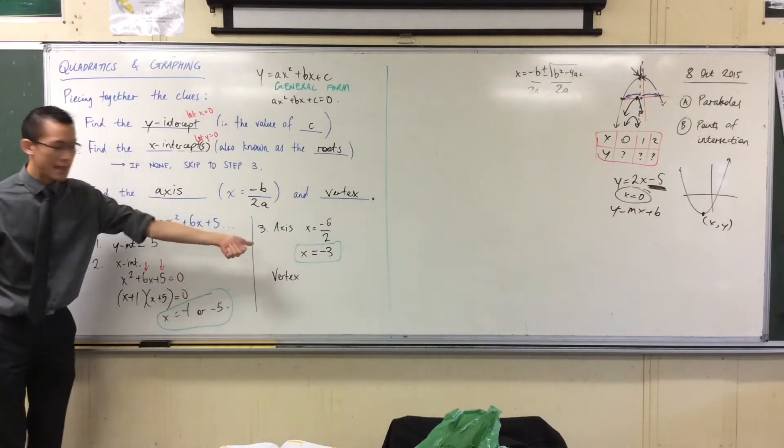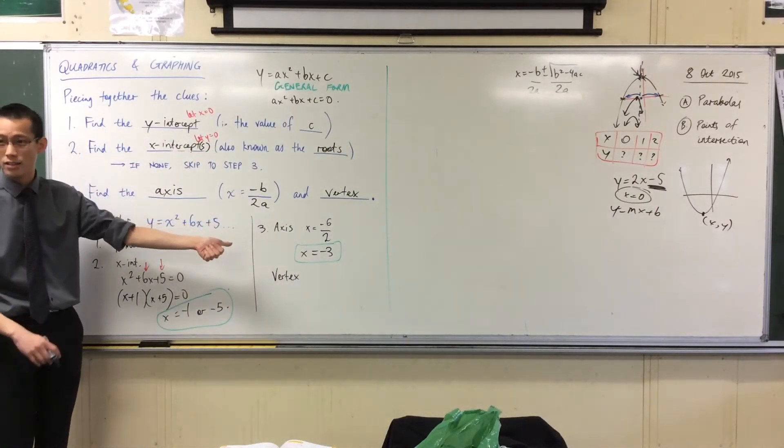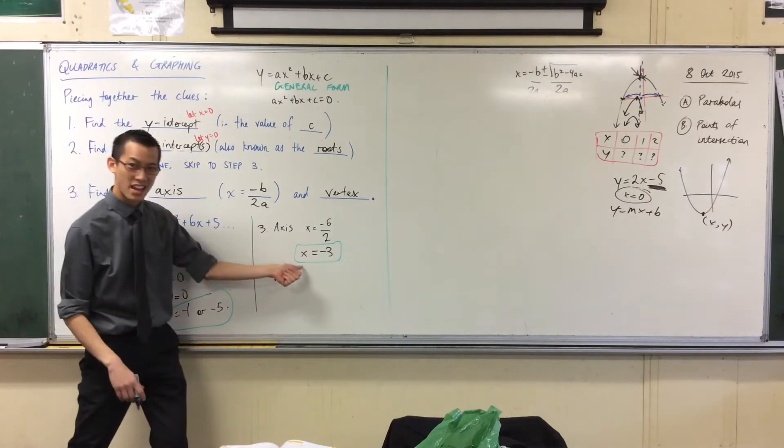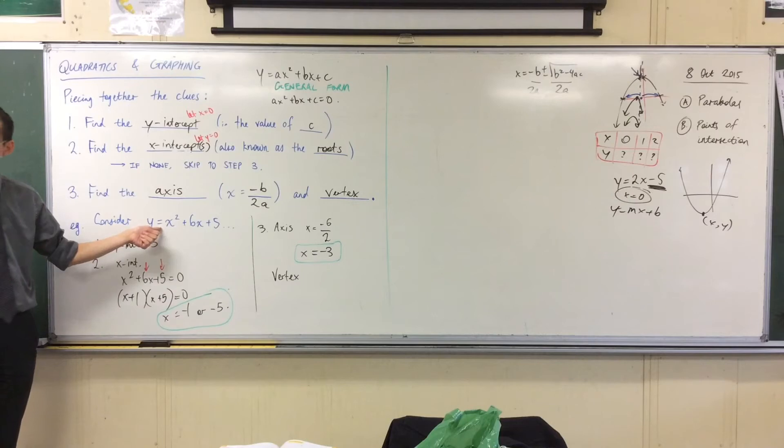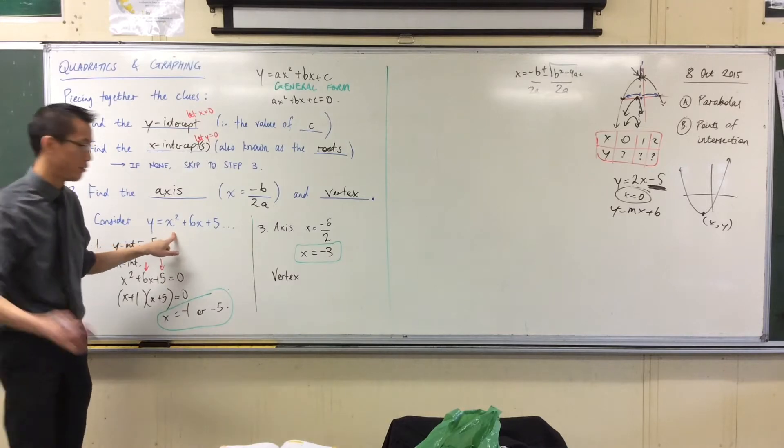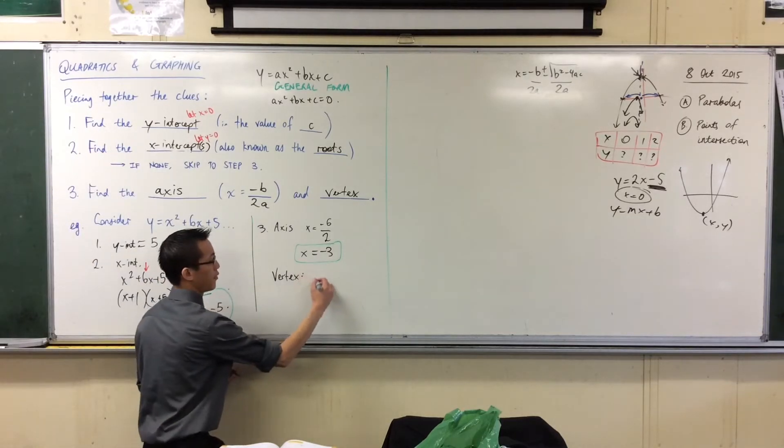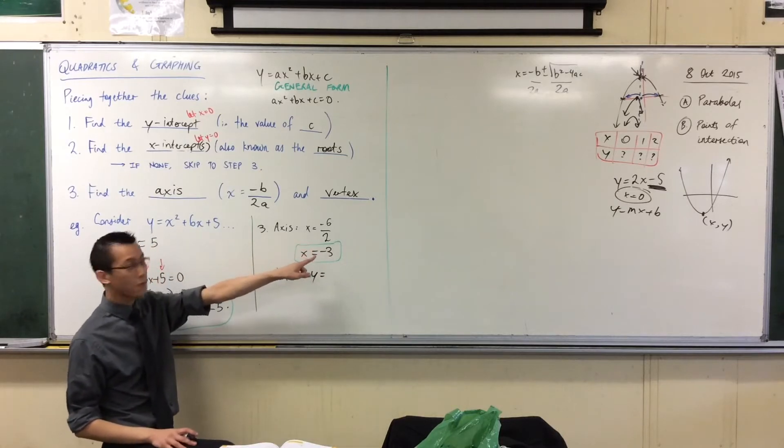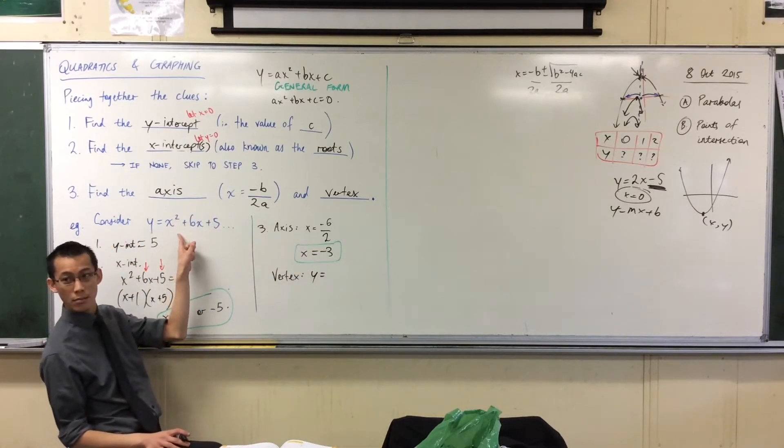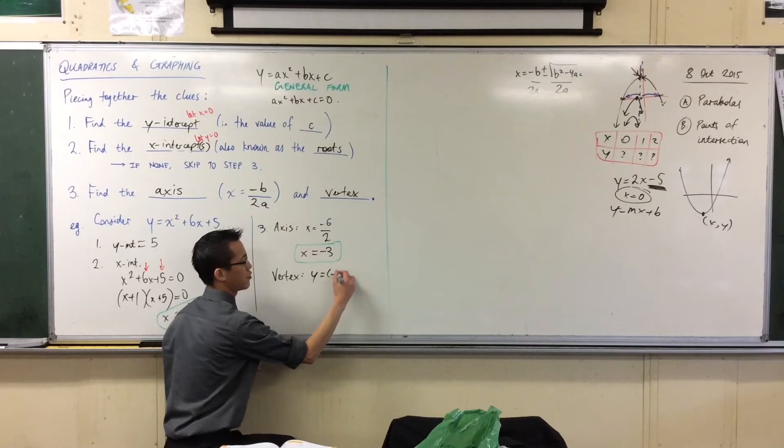So I need an X, and then I need a Y, and then I'll know exactly where it is. So I will take that X value, the one you just found, the axis of symmetry, and I'm going to stick that guy back into my original equation. I'm going to put the axis of symmetry into the equation, and that will hand me a Y value. So let's give it a go.